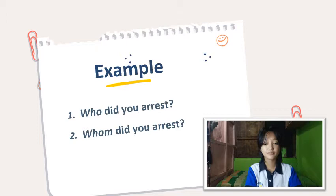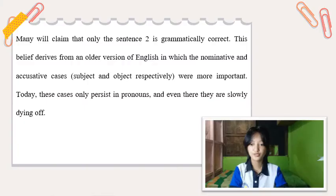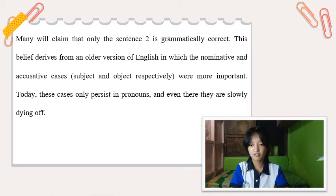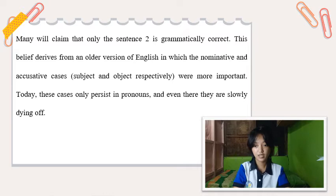First, we have the sentences: 'Who did you arrest?' and 'Whom did you arrest?' Many will claim that only the second sentence is grammatically correct. This belief derives from an older version of English in which the nominative and accusative cases — both subject and object respectively — were more important. Today, these cases only persist in pronouns, and even there, they are slowly dying off.